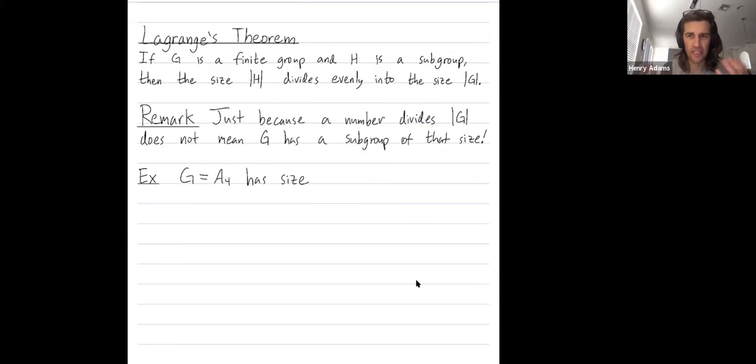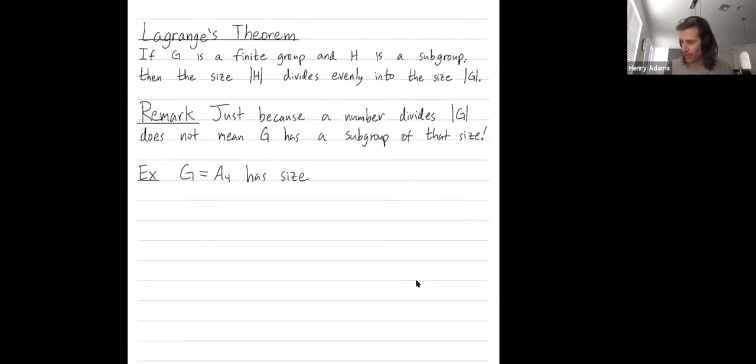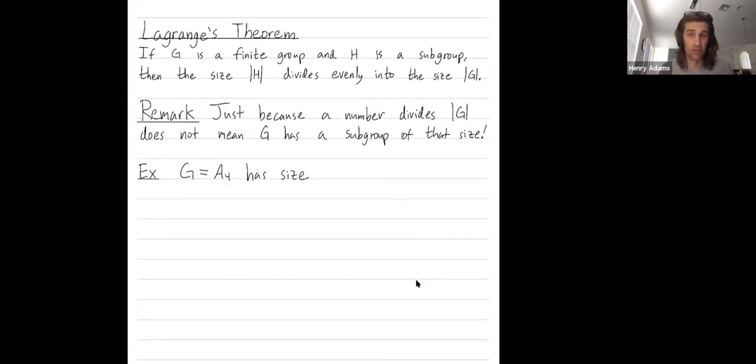The sort of easiest or smallest example of this is not too bad, but not too easy. It's going to be the alternating group on four elements.